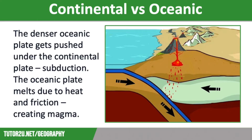As the oceanic plate subducts, it melts due to heat and friction, creating magma. Friction between these plates may also cause earthquakes to occur. The magma then rises in great plumes to form steep sided composite volcanoes. These can have very explosive eruptions.